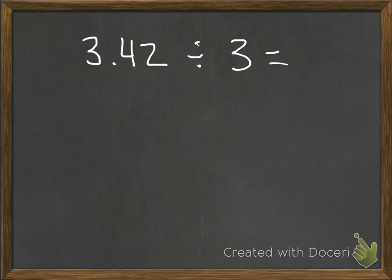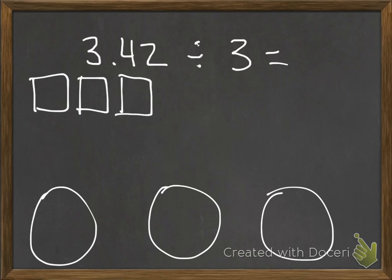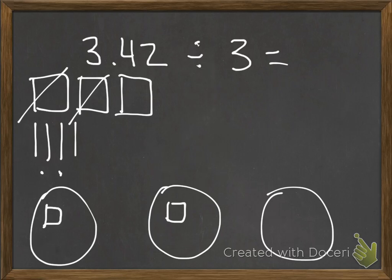Here's one last example: 3 and 42 hundredths divided by 3. I make three circles along the bottom and represent 3 and 42 hundredths with three wholes, four tenths, and two hundredths pieces. Starting with my largest pieces — my wholes — I have three wholes and three groups, so I can fit one whole in each group with none left over. No regrouping of whole numbers is needed.